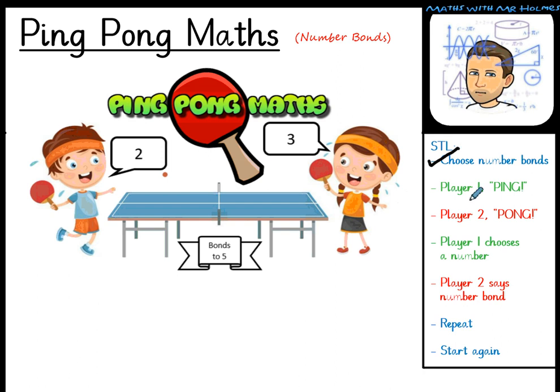You then have Player 1. Player 1 could be a teacher, a mum, a dad, a child — up to you. Player 2 is who you're playing along with. So if you're a teacher, that could be the whole of your class or a small group. If you're a child, it could be your brother or your sister, perhaps a cousin or a friend. And if you're a mum or a dad, it could be your son or daughter or perhaps even your wife or husband.